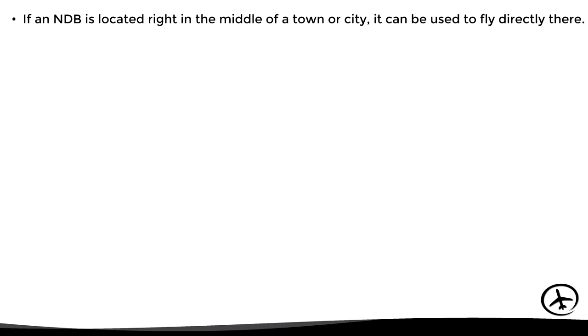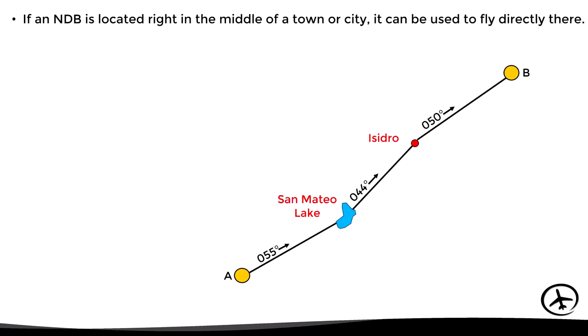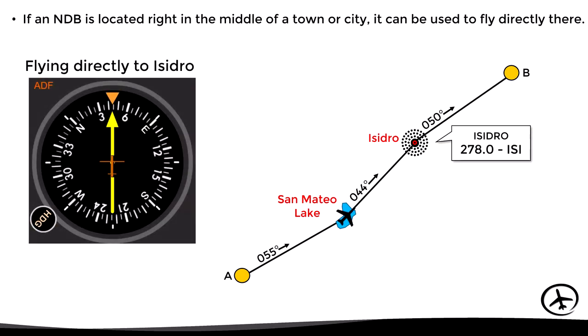If an NDB is located right in the middle of a town or city, it can be used as reference to fly directly there. In this case for example, there is an NDB very close to a CEDRO, which can be used by the pilot to proceed directly there using the ADF after passing over San Mateo Lake.